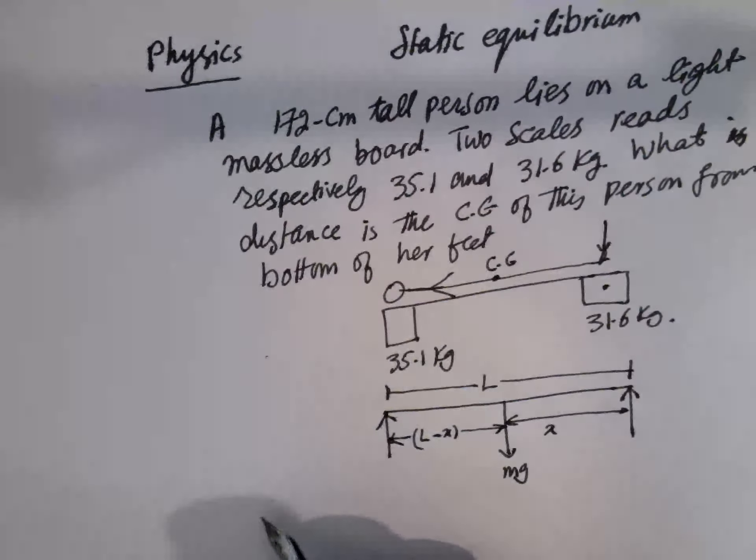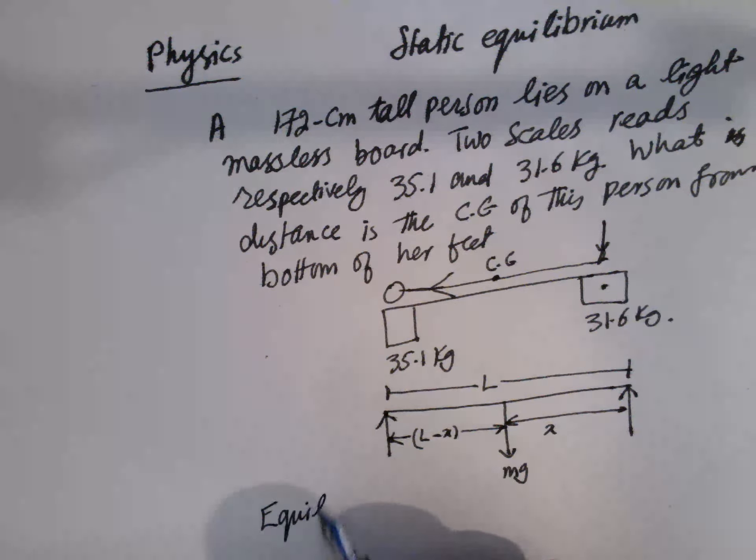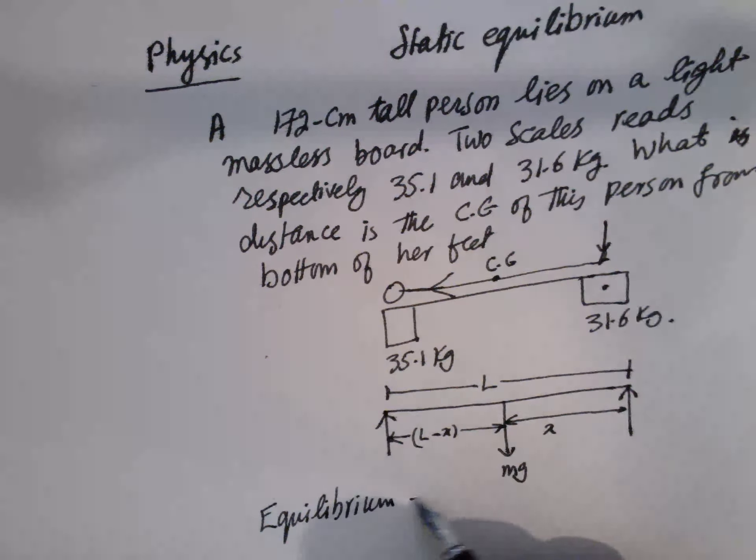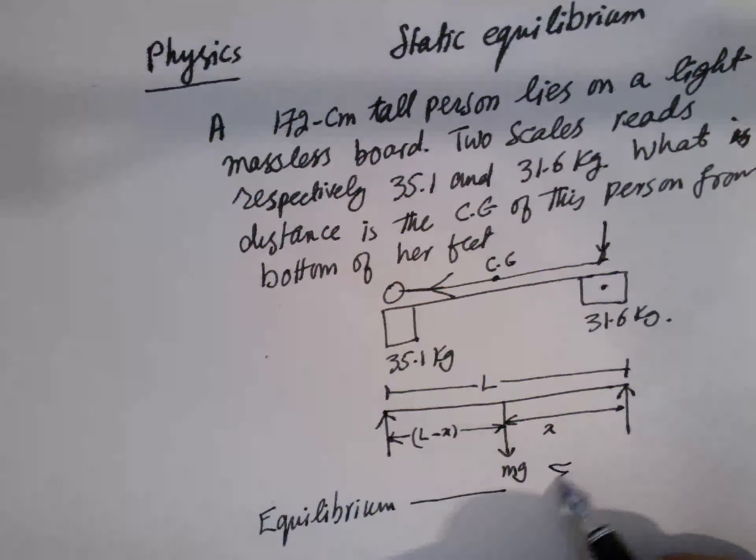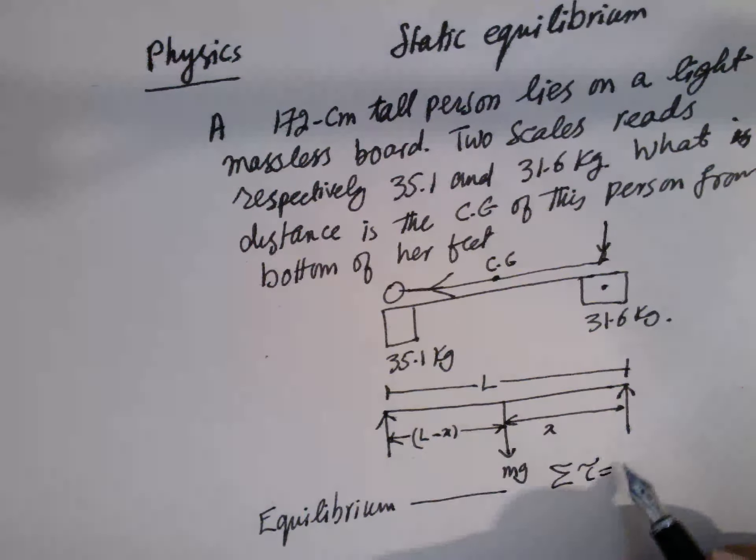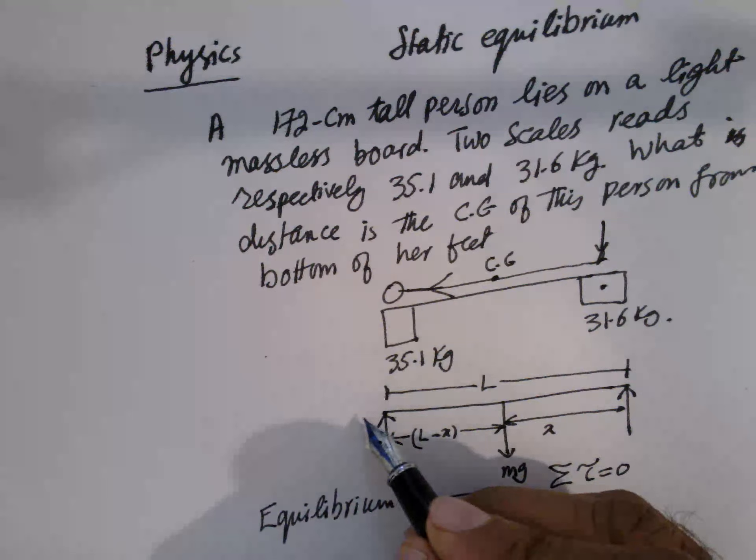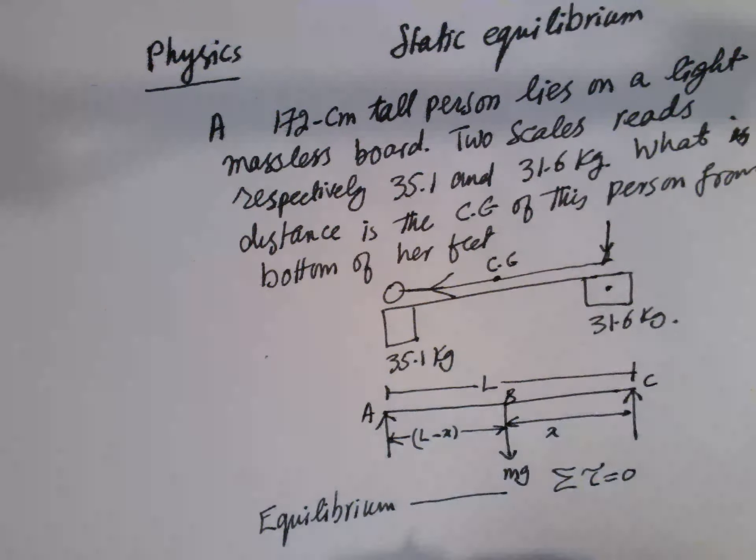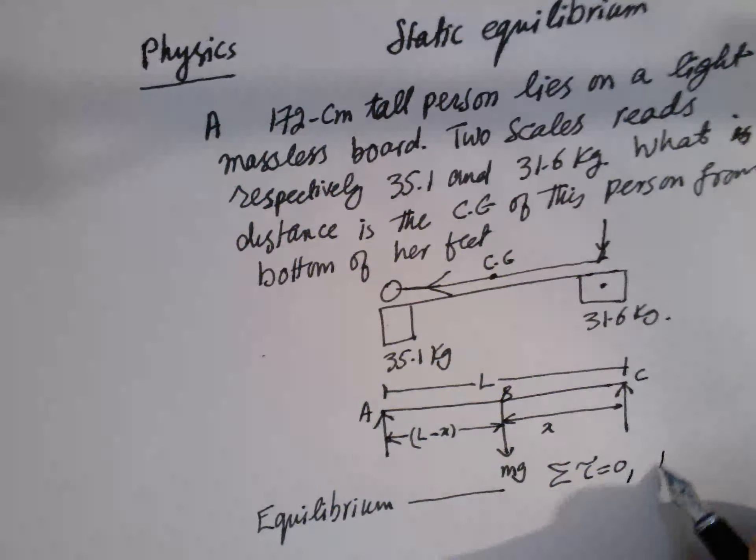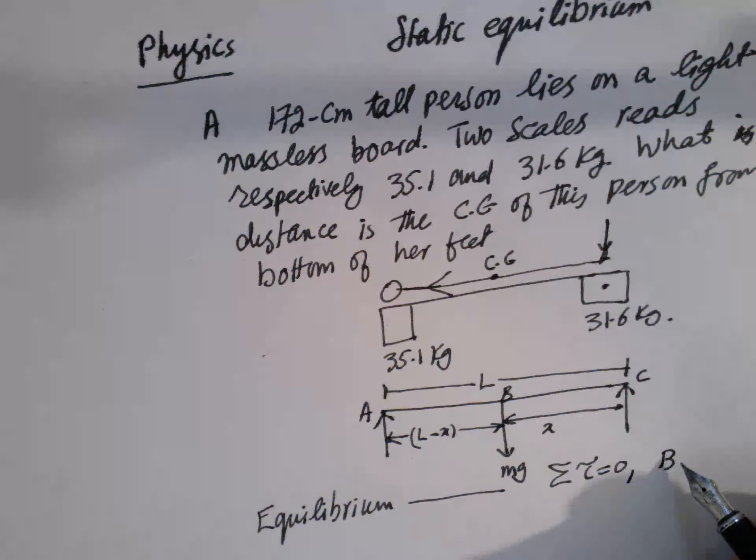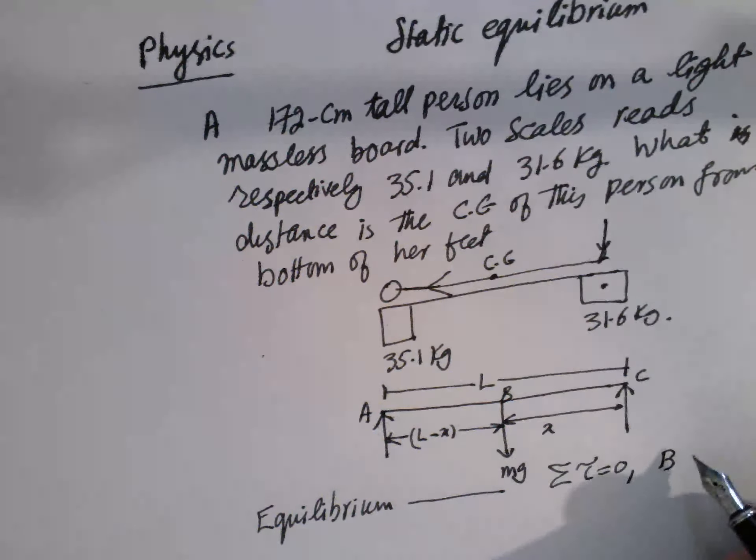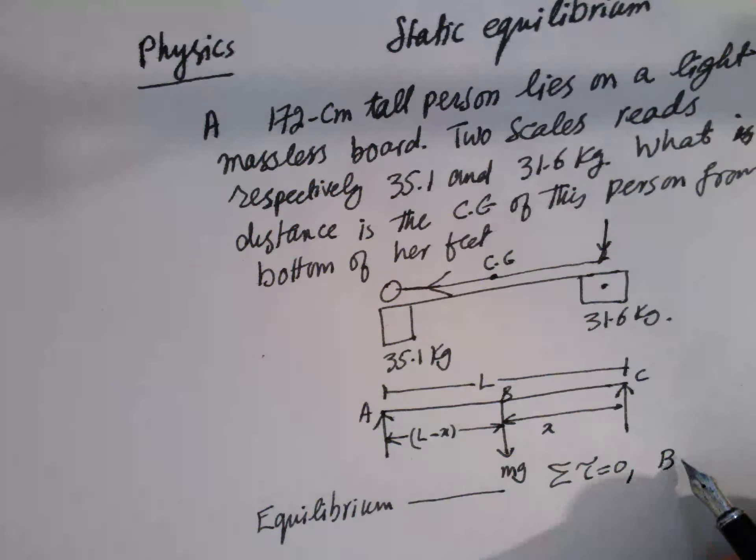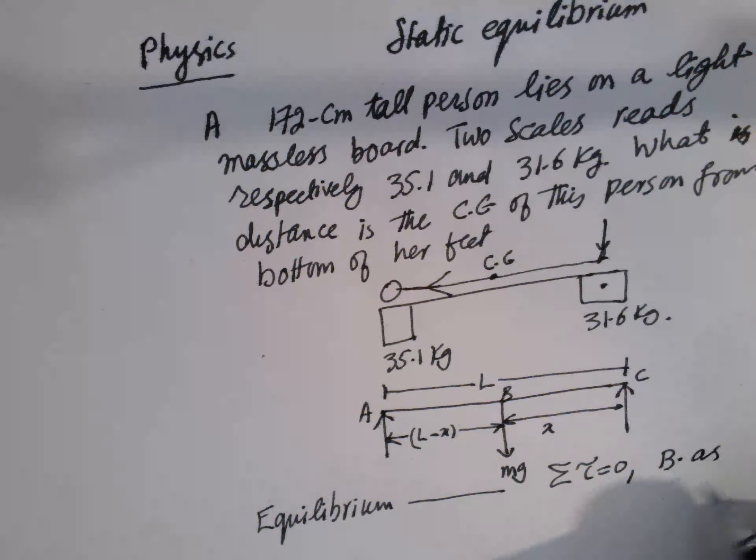So because no acceleration, so equilibrium. So that means sum of the torque is equal to zero. So that is A point, this is B point, this is C point. So take the pivot B point because we have to find A and B. We are not concerned about this G center. So B as pivot.